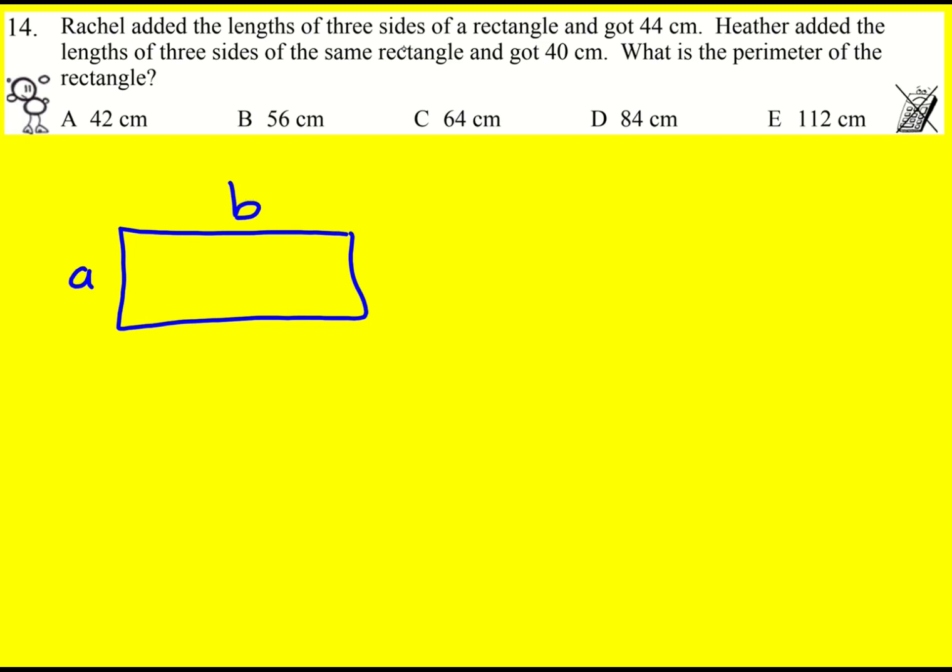And so because Rachel added the lengths of three sides of a rectangle and got 44, she must have added two of the longer ones and one of the shorter ones. So I'm going to write down A plus 2B is equal to 44.